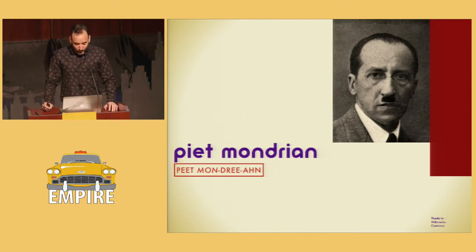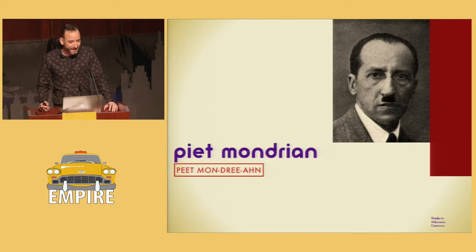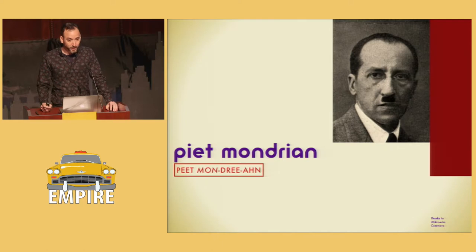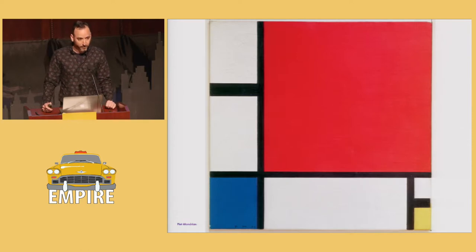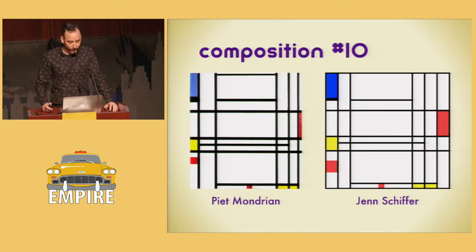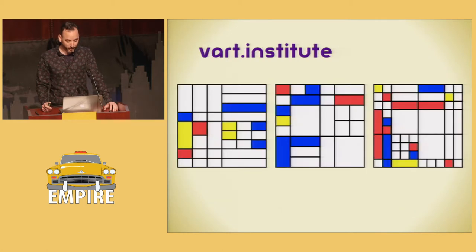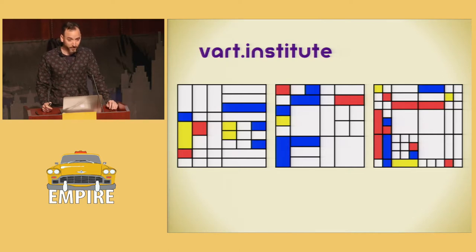Moving on, let's talk about Piet Mondrian, who in 1922 could still get away with that mustache. He's probably the most widely recognized artist of the five presented here today, and he was a notable member of the De Stijl movement. His paintings of rectangles are the model of modernism in two dimensions. Mondrian's composition paintings create a graphic tension and balance with nothing more than basic shapes and primary colors laid out into a grid. And Mondrian seems to be the gold standard for experimenting with grids in HTML.